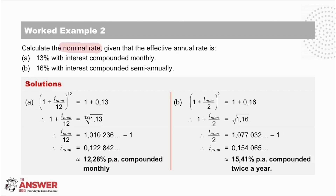For this example, we are asked to calculate the nominal rate, which means we use the same equation but working in the other direction. In A, we are given that the effective interest rate is 13% per annum, and we must calculate the nominal rate if the interest is compounded monthly. Because it is monthly, we divide by 12 and take it to the power of 12. Solving carefully for the nominal interest rate, we get 12.28% per annum compounded monthly.